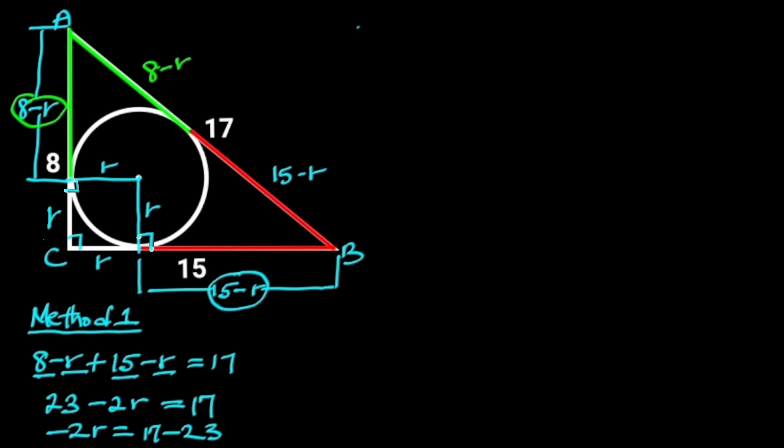17 minus 23 is minus 6. So minus 2R is equal to minus 6. Dividing through by minus 2 will leave us with R is equal to 3.